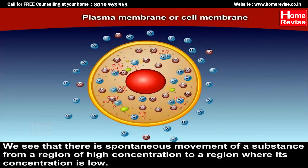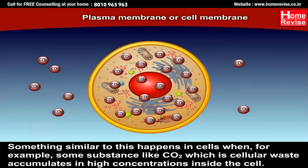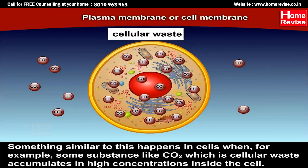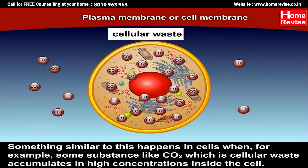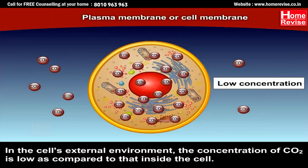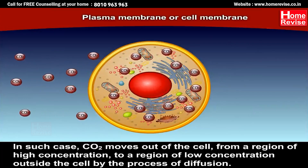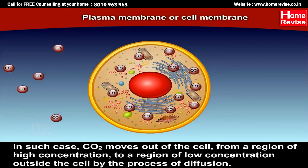There is spontaneous movement of a substance from a region of high concentration to a region where its concentration is low — something similar happens in cells. When substances like carbon dioxide, which is cellular waste, accumulate in high concentrations inside the cell, the concentration of carbon dioxide in the cell's external environment is lower. In such a case, carbon dioxide moves out of the cell from a region of high concentration to a region of low concentration outside the cell, by the process of diffusion.